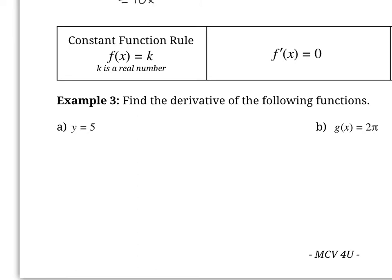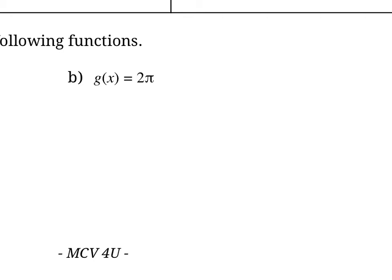The constant function rule is probably the most straightforward. If we have a constant value like y equals 5, remember the derivative is just the slope. If we graph y equals 5, it's a horizontal line, and the slope of a horizontal line is 0. So y prime equals 0. That goes for any constant value — for g of x equals 2 pi, since 2 pi is just a constant number, g prime of x equals 0.